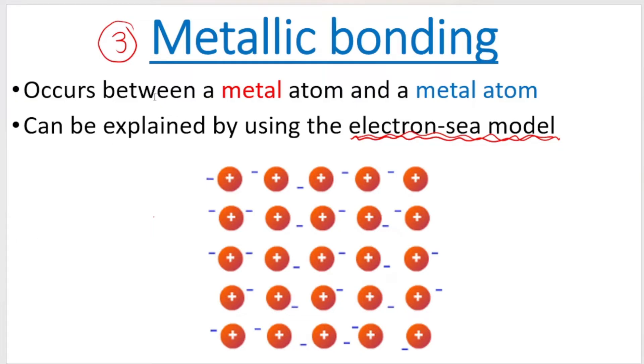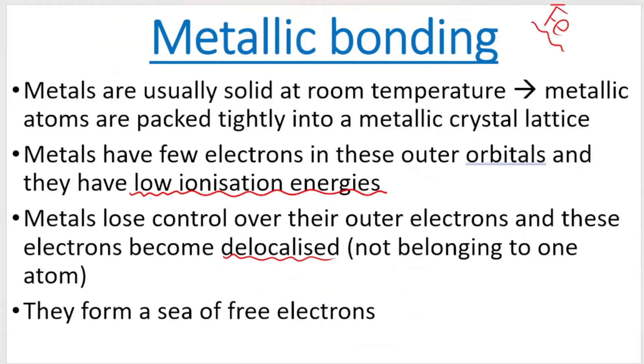As I mentioned, metallic bonding has to do with metals. So it occurs between a metal atom and a metal atom. We're going to explain metallic bonding by using the electron sea model. Now, it's very nice because this section on metallic bonding is basically just theory. You just have to understand the concept. The first thing that you need to understand is that metallic atoms are generally packed tightly together, little spaces between the particles. That's why metals are usually solid at room temperature.